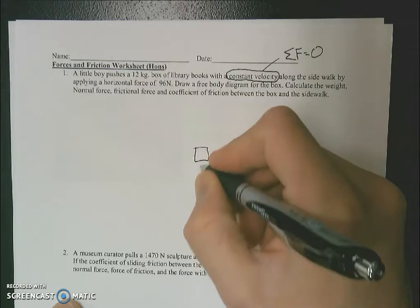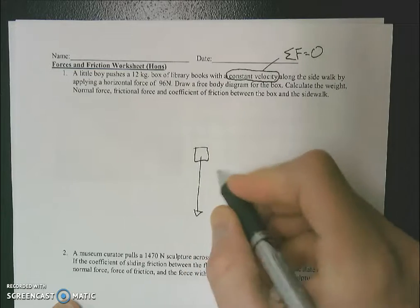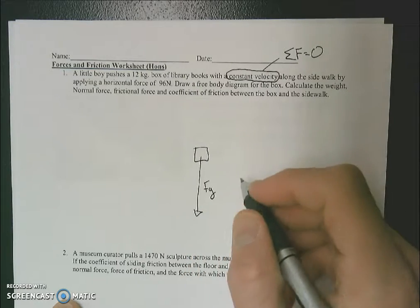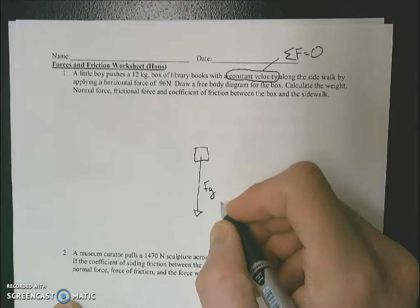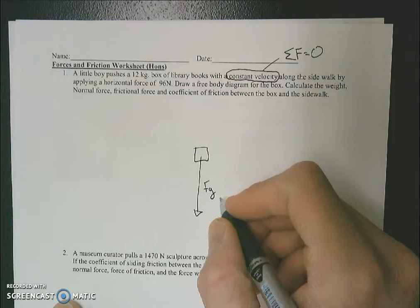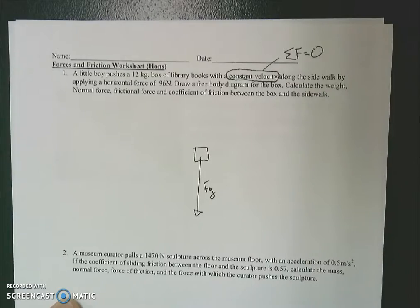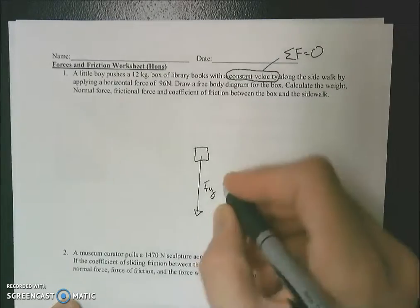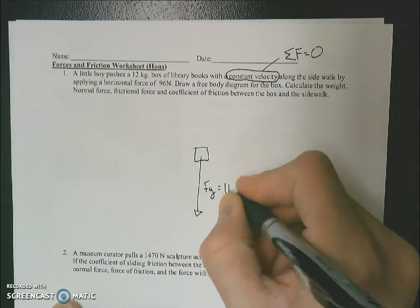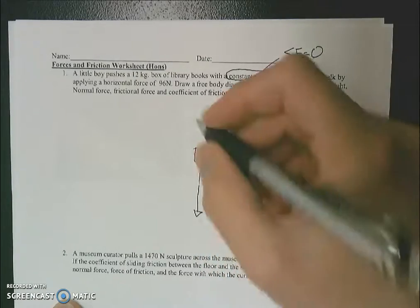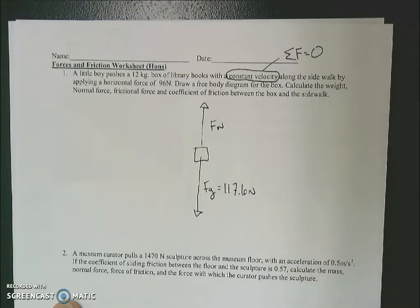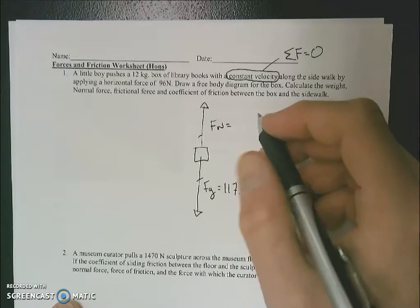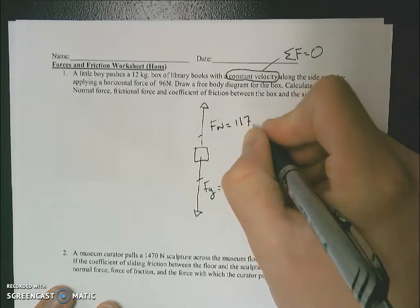Going through the problem, a 12 kilogram box means that the force of gravity is going to be 12 times 9.8. That ends up being 117.6 newtons. Since I know this is on a flat surface, I know there's got to be a normal force. I also can assume, because it doesn't say anything about acceleration, that these two forces balance and cancel. So right away, I could say my normal force is also going to be 117.6 newtons.